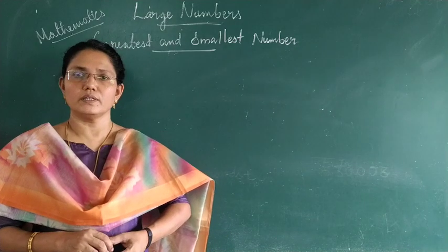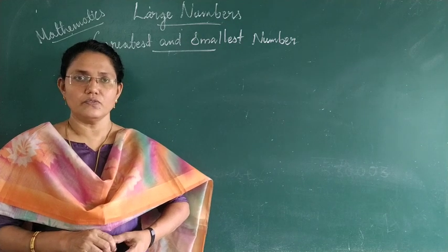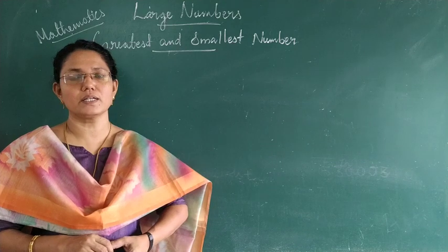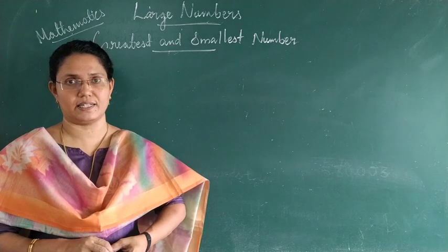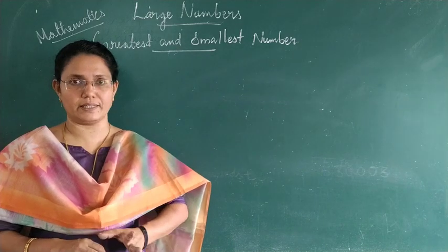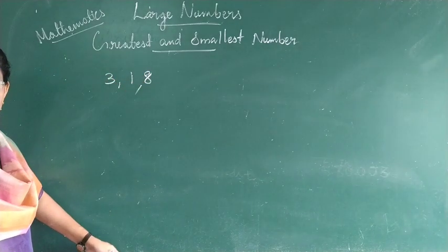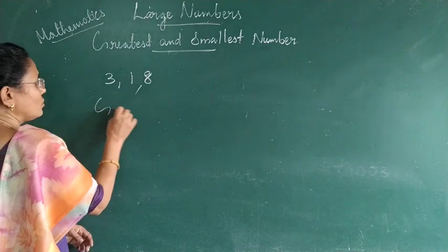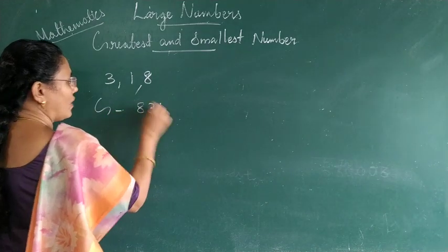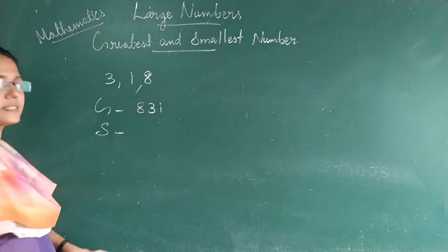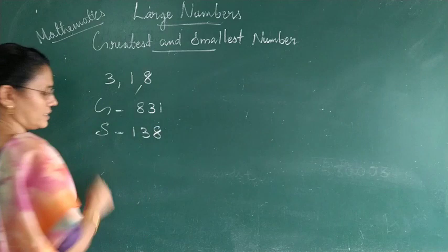To form the greatest number using a set of digits, we have to arrange the numbers in descending order — the greatest digit at the extreme left, then the second greatest to its right, and so on. For example, with the digits 3, 1, 8: to write the greatest number, arrange in descending order: 831. The smallest number is written in ascending order: 138.